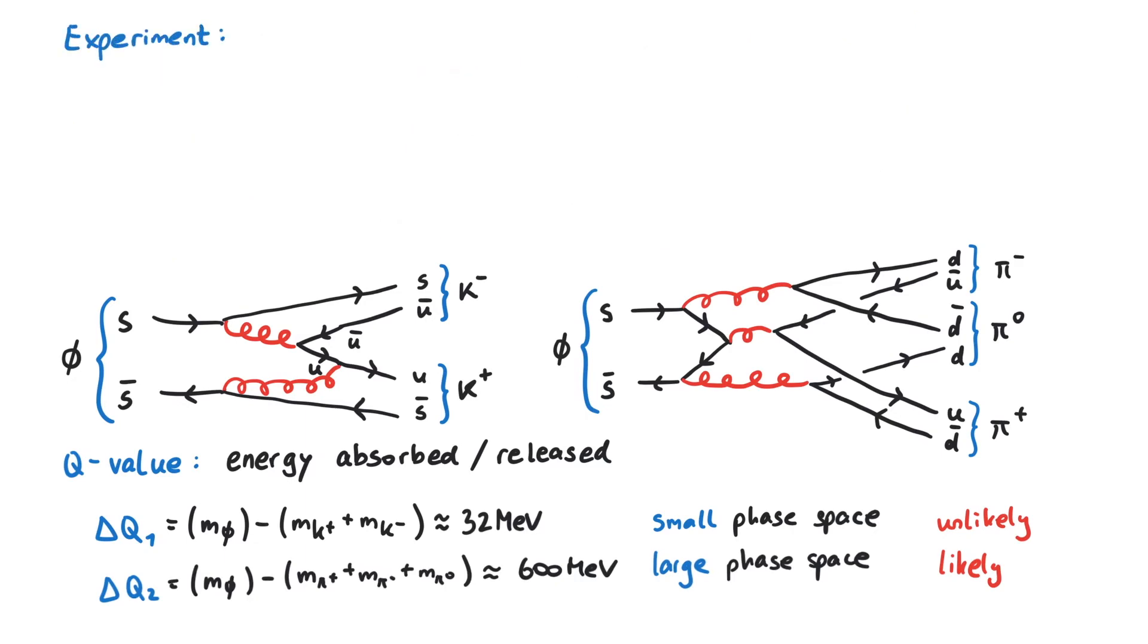But here comes the experiment. If we measure the decays of many many phi mesons, we see that around 84% of them decay into kaons. How can that be?